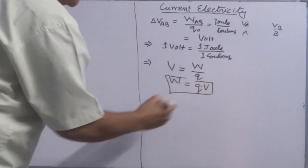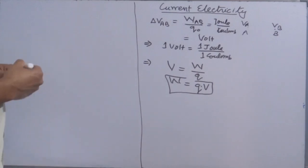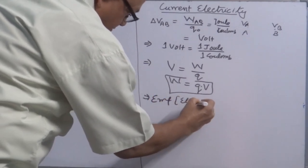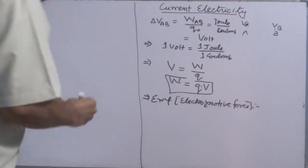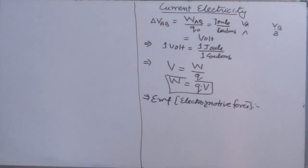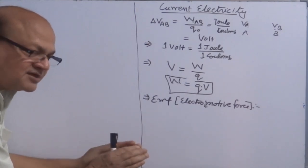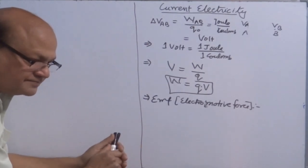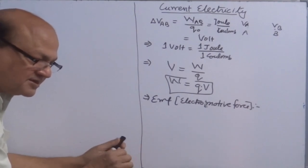Whenever any charge is placed in a region between two points where a potential difference exists, this potential does work. Now, two more terms. Number one is EMF — Electromotive Force. EMF stands for Electromotive Force. It has nothing to do with mechanical force; it is the force motivating electrons. EMF is the potential difference between two points at its maximum value. What is EMF? It is the maximum value of the potential difference between two points.